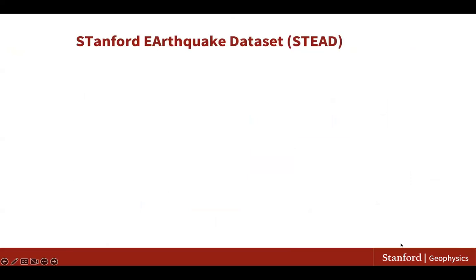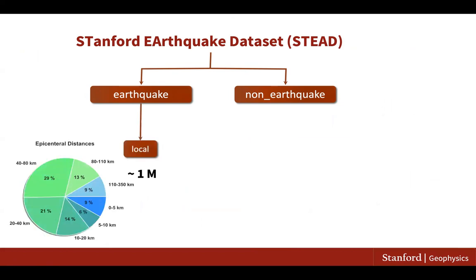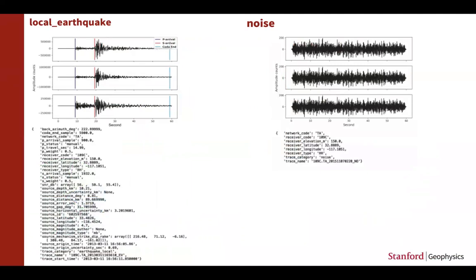So this is the dataset. It consists of two classes: earthquake and non-earthquake signals. Currently, the earthquake class has only one category, local earthquakes, including more than 1 million three-component waveforms. The non-earthquake class now contains about 350,000 examples of a variety of natural and non-natural noises.